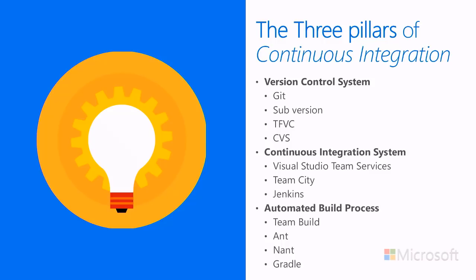A continuous integration system — like Visual Studio Team Services, Team City, or Jenkins — gives you an automated framework capable of capturing code commit events and triggering a CI process at the back end. The automated build process uses orchestrators like Team Build, ANT, NAND, or Gradle — capable of executing the tasks within your CI process. These are the three key things you need in any CI setup.